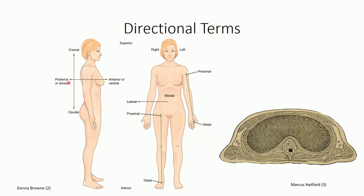Superior and inferior relate to structures that are closer to the head and feet, respectively. It's not uncommon to also hear the terms cranial and caudal, meaning towards the head or tail, in place of superior and inferior. Anterior and posterior relate to forward and backward positions. We can also use the directional terms ventral and dorsal. Medial is used to describe structures closer to the midline, while lateral refers to structures further away from the midline of the body. A third term closely related to this pair is median. Occasionally, when discussing three sets of structures, median will refer to the structure closest to or directly along the midline, giving us median, medial, and lateral structures relative to the midline.